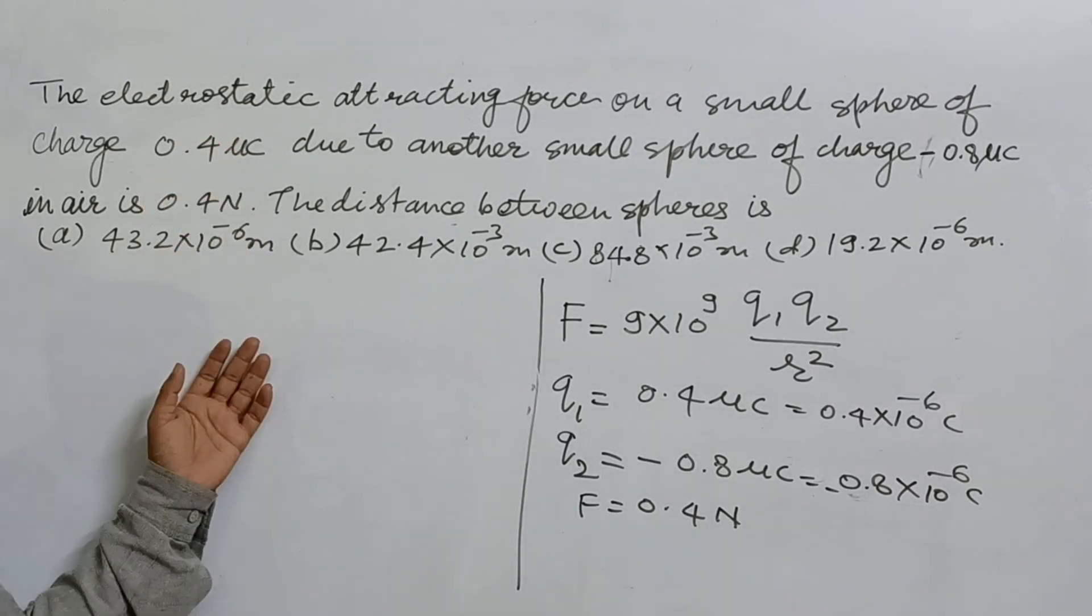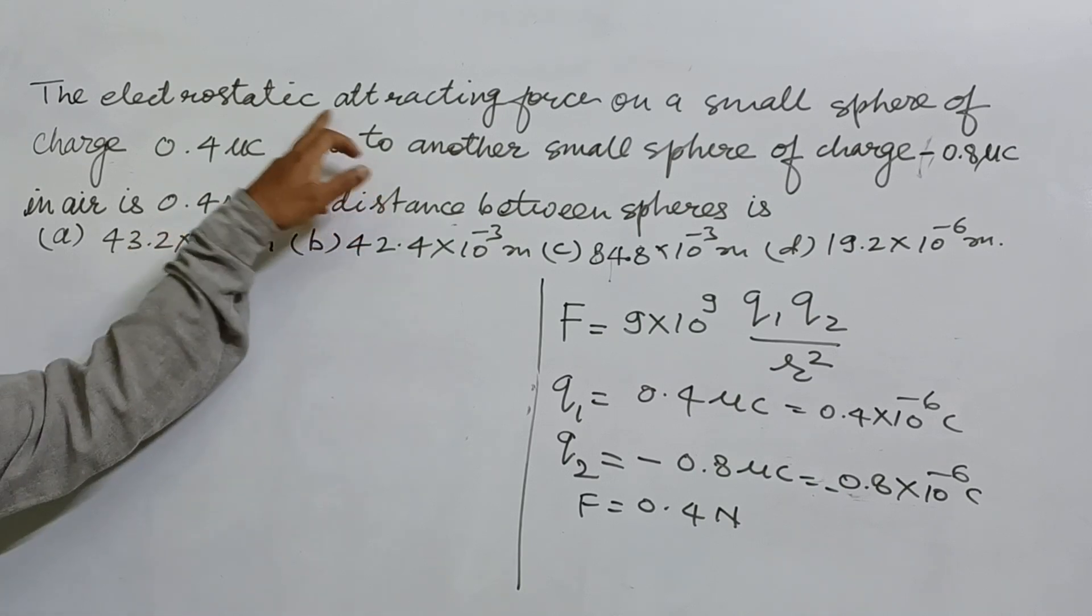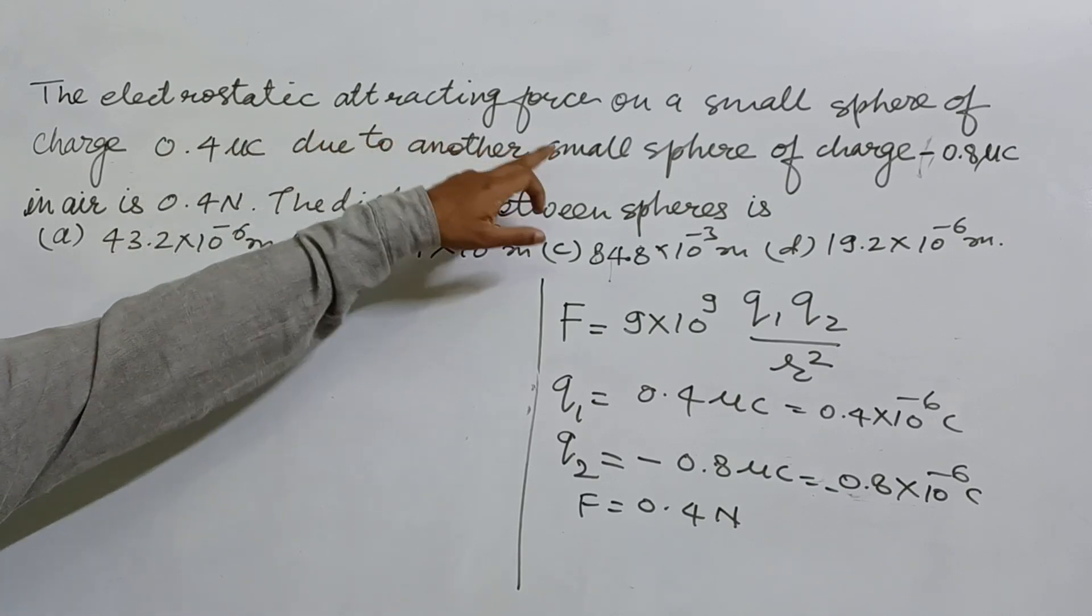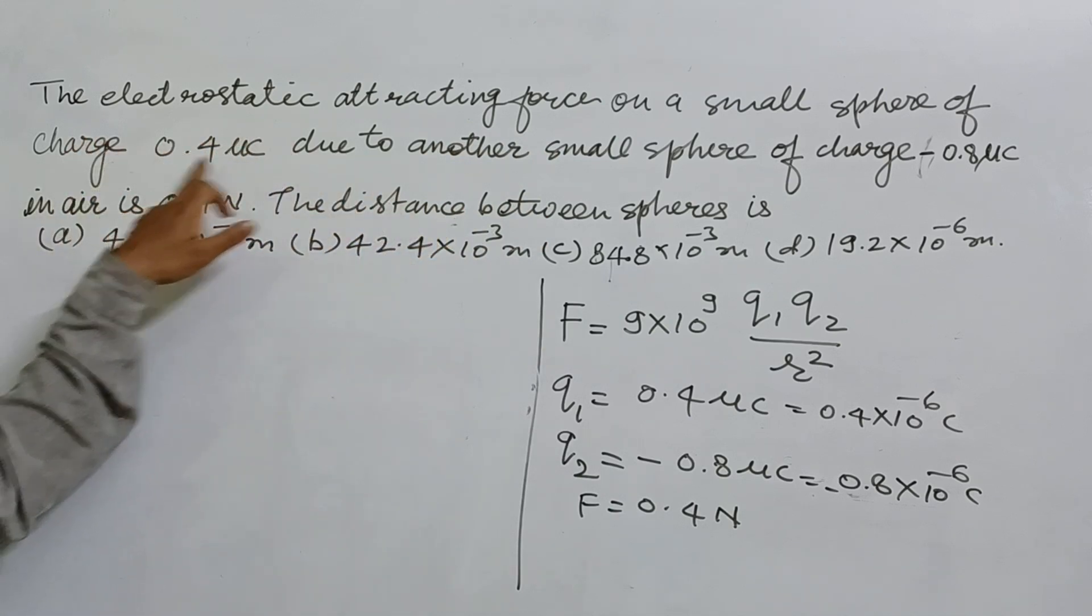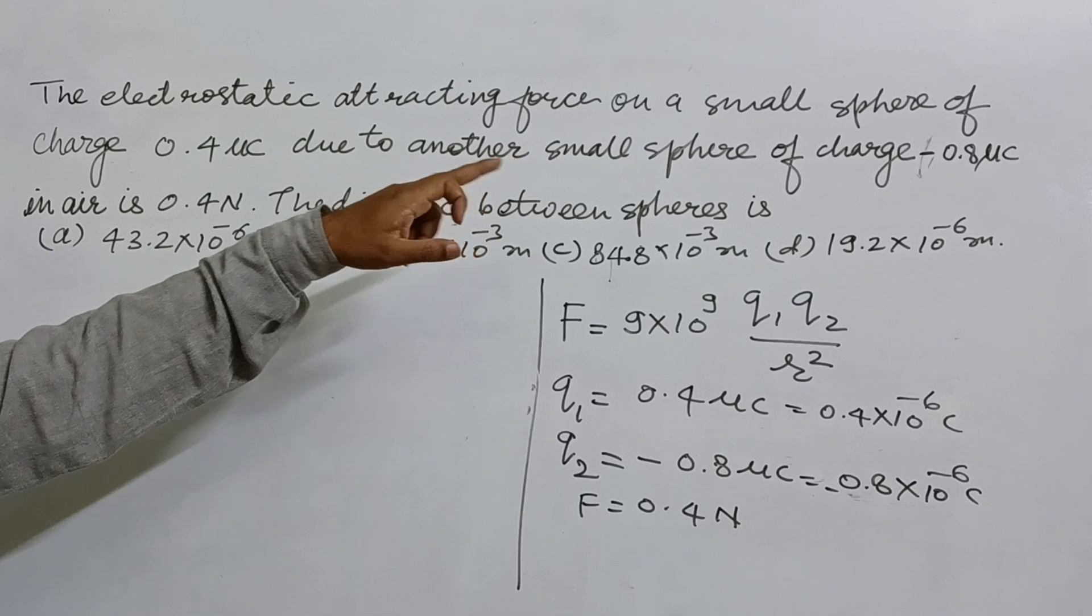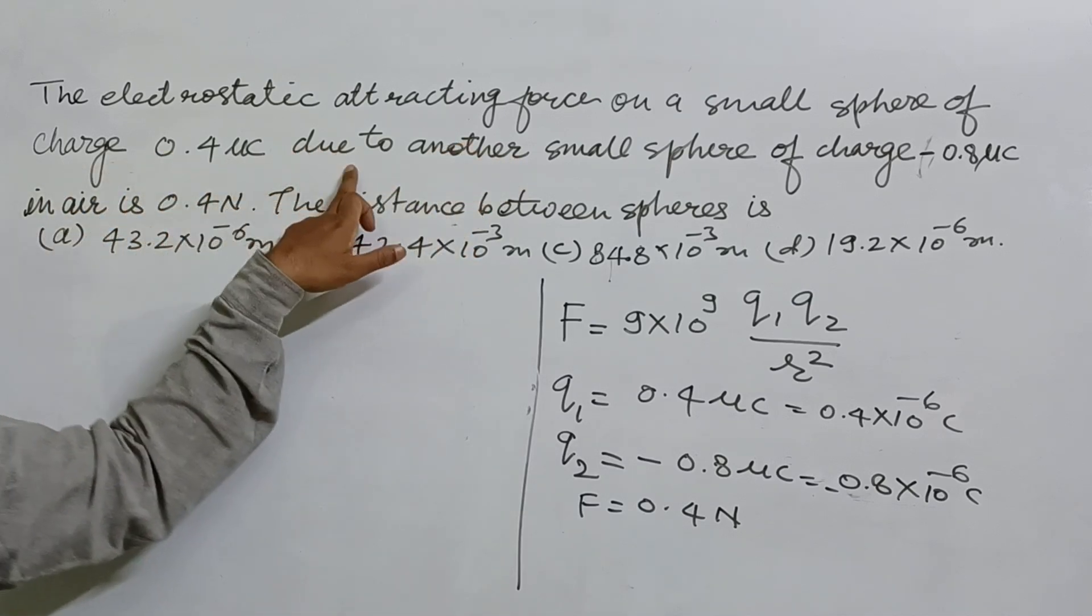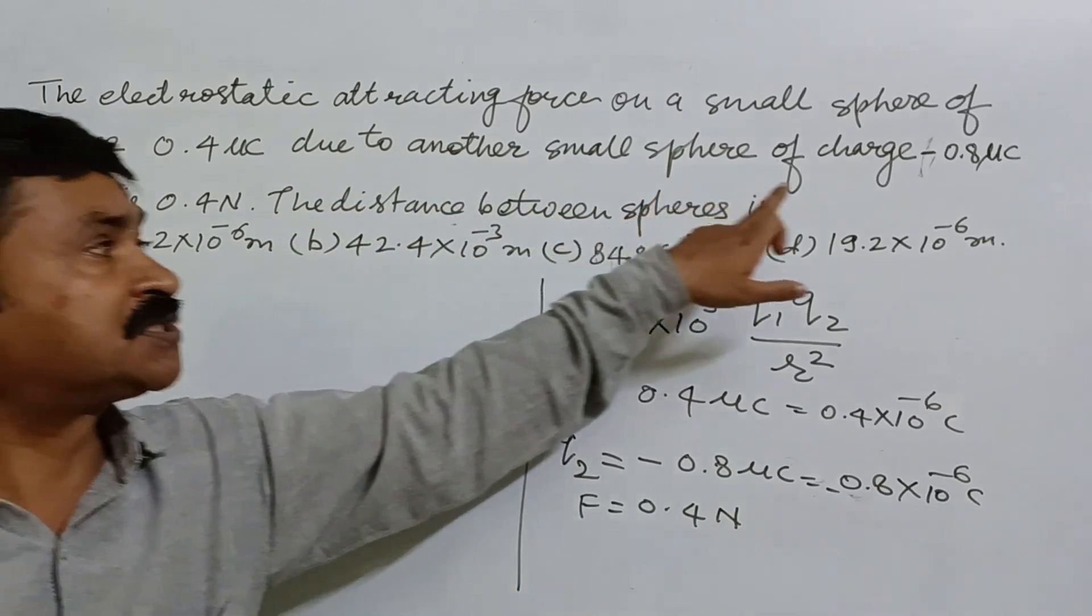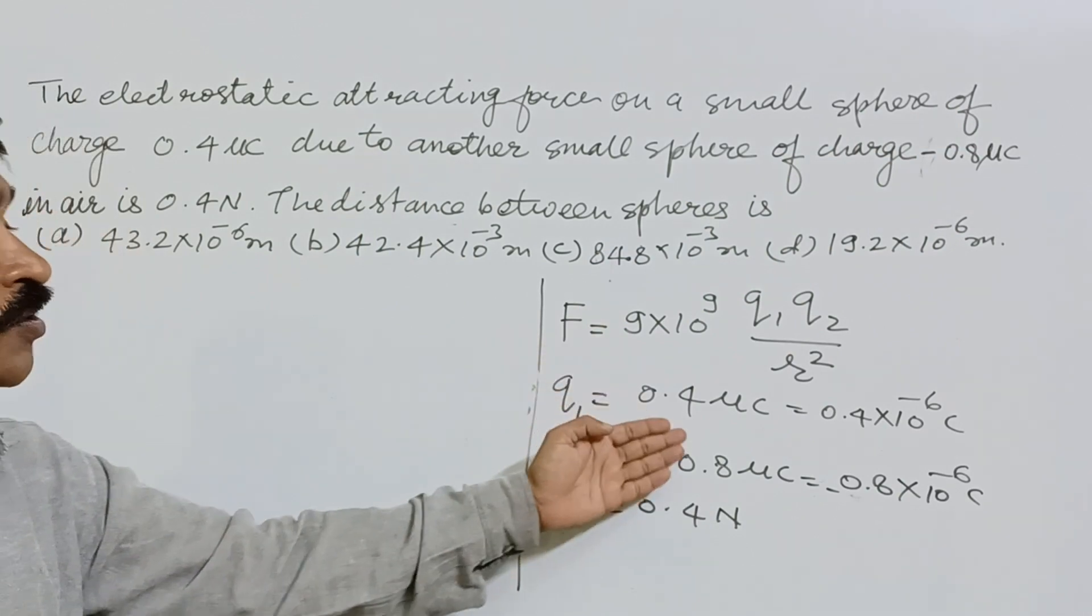Yes students, here we have a question based on electrostatic force. This is the electrostatic attracting force - why attracting? Because the question involves a small sphere of charge 0.4 microcoulomb due to another small sphere of charge -0.8 microcoulomb, so one charge is positive nature and another is negative.